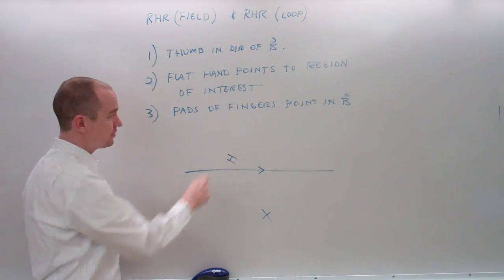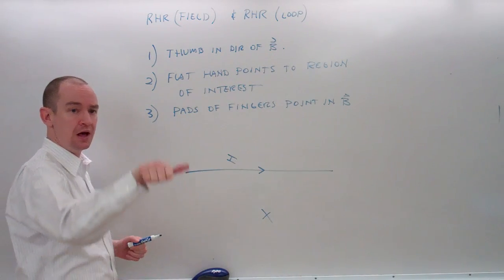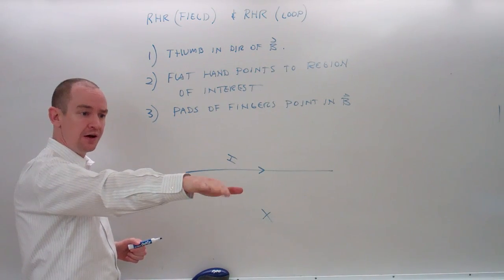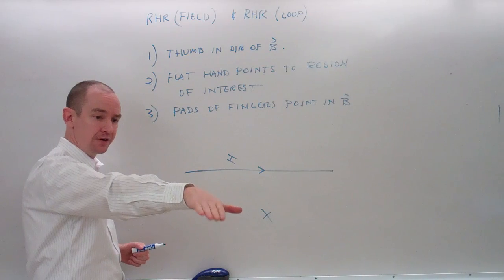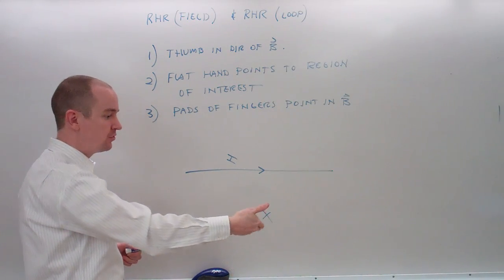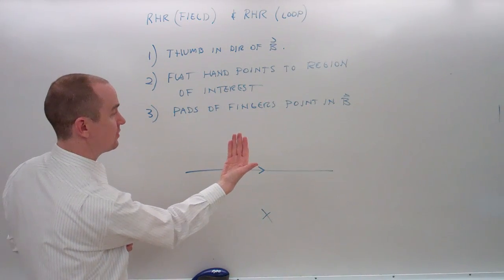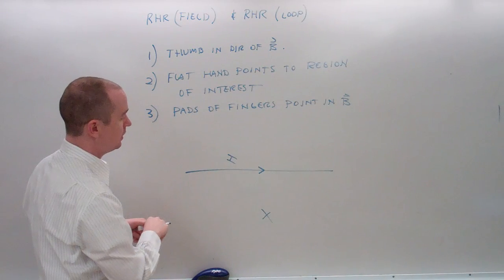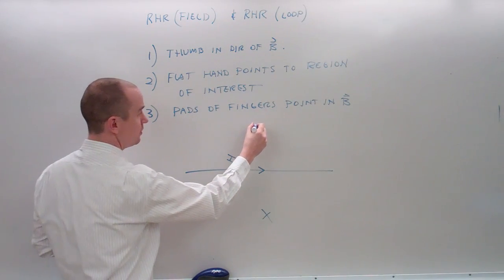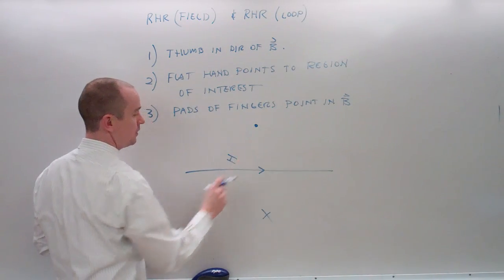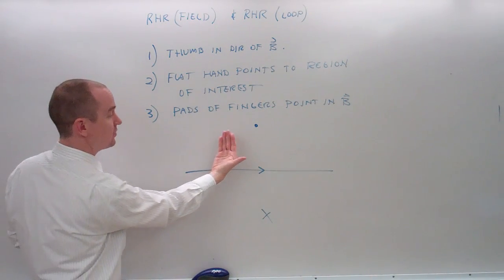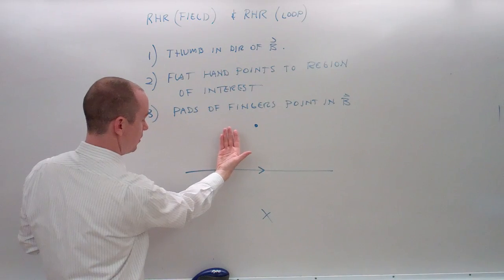What's the field doing on the other side? Thumb in the direction of current, flat hand, point to the region of interest. The pads point how the field is pointing. So, up here, it must be a dot because it's coming out of the board.